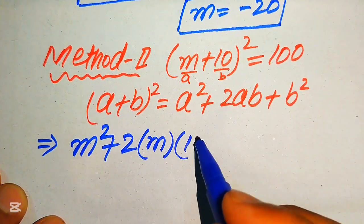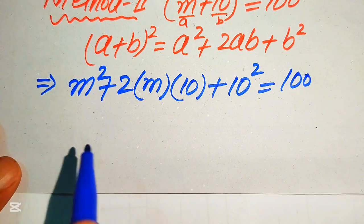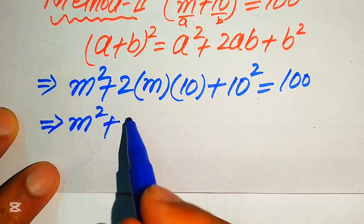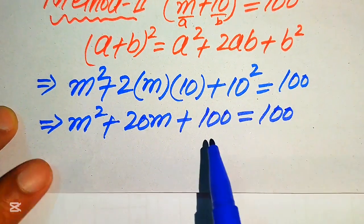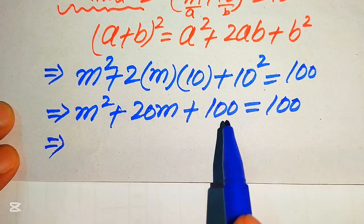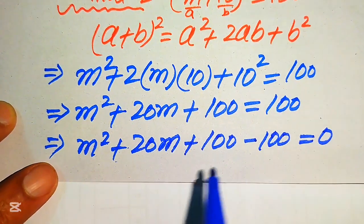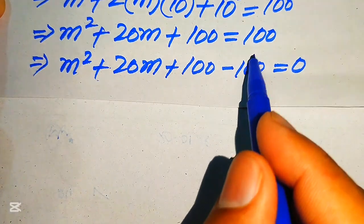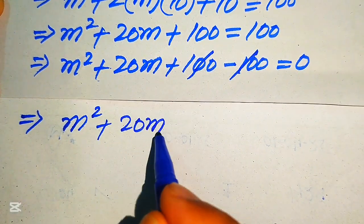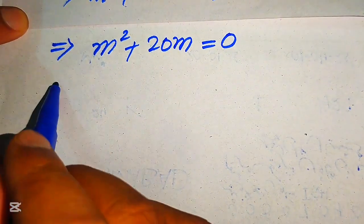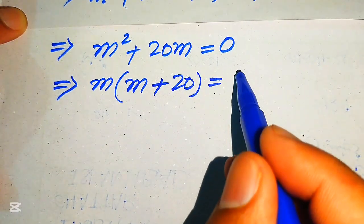After substitution, we get m² + 2(m)(10) + 10² = 100, which simplifies to m² + 20m + 100 = 100. Moving 100 to the left-hand side gives m² + 20m + 100 - 100 = 0. The +100 and -100 cancel, leaving m² + 20m = 0. Taking m as a common factor gives m(m + 20) = 0.